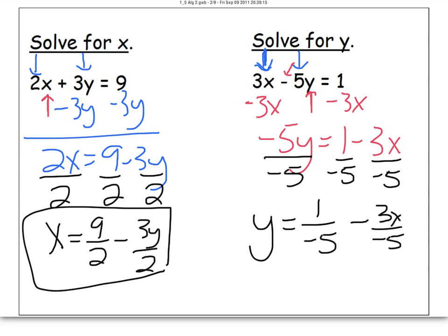Now, this double negative we have here, we normally don't keep that. We would actually change it to a positive. So the final answer would be y equals 1 over negative 5 plus 3x over positive 5. And that's our final answer.